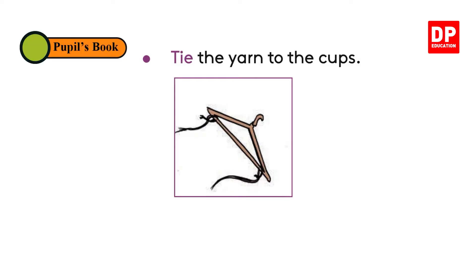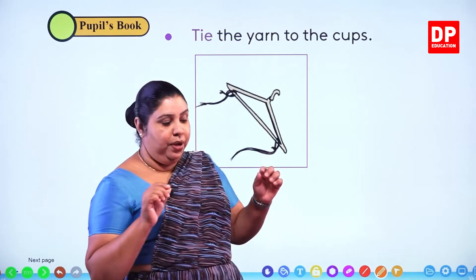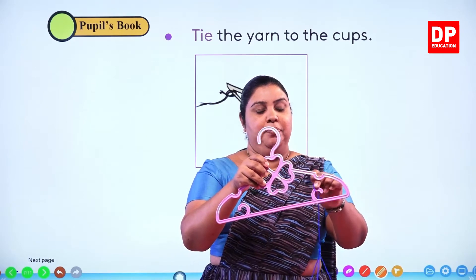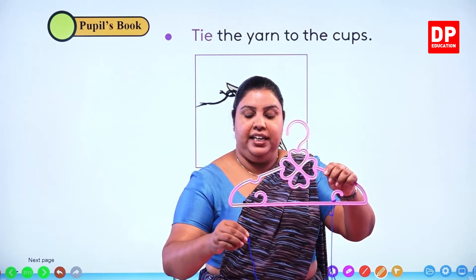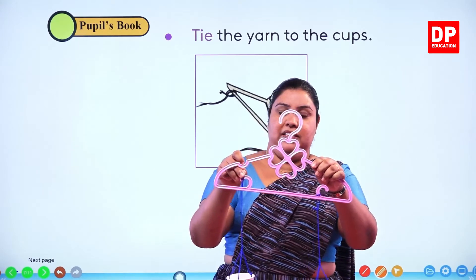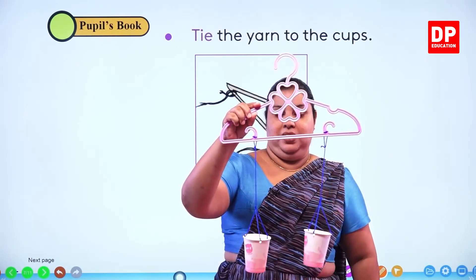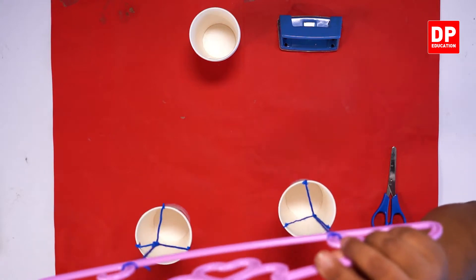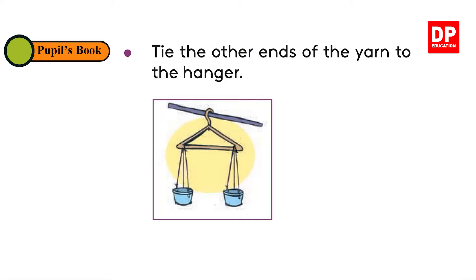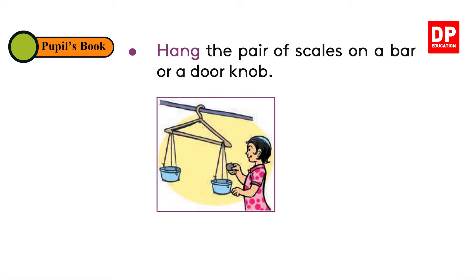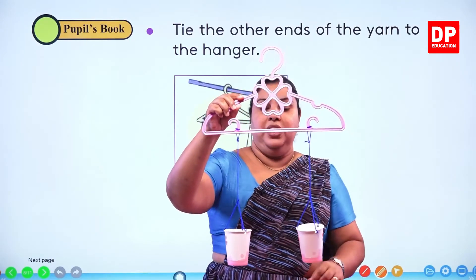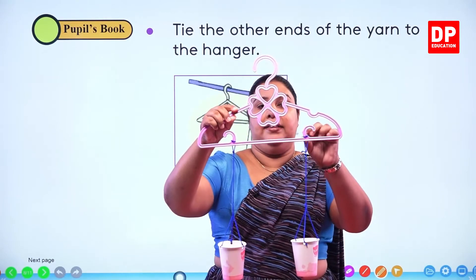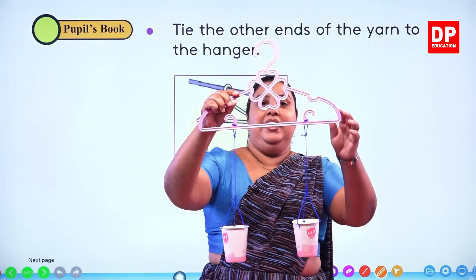Let's see what we have to do next. Tie the yarn to the cups and then you have to hang and fix it to the cloth hanger. We are going to keep it like this — attach our scales to the cloth hanger. Now can you see — you have to tie the strings carefully and hang them over to the cloth hanger. Tie the other ends of the yarn to the hanger. We have tied them up to the cup and these strings are then fixed to the cloth hanger on both sides, neat and nice.